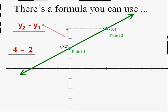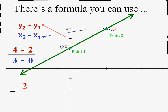And the run — the amount you went over — you counted the blocks, but that's really the x part of the second point minus the x part of the first point, or in this case three minus zero. Four minus two is two and three minus zero is three — that's the slope: up two and over three. You can get that without even looking at the picture by using the formula y2 minus y1 over x2 minus x1.